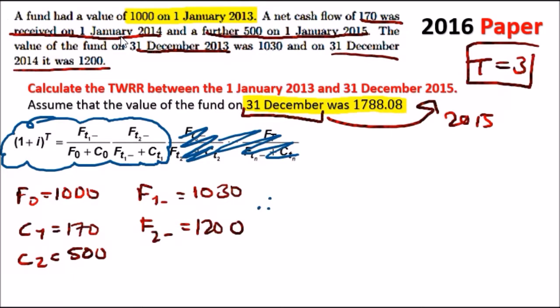Therefore, we're going to have 1 plus i to the power 3 equals the fund value of time 1 over the fund and cash flow at time 0. This is 1,030 over 1,000 because there's no cash flow, no initial cash. And the second one would be time 2, so 1,200 over the first year cash flow which is 1,030 plus the first cash flow 170.